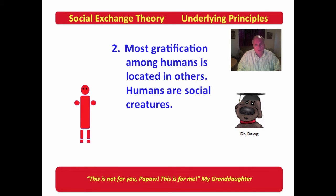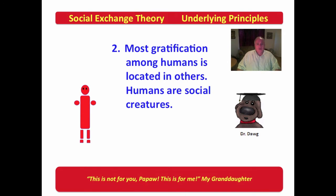Another important part of exchange theory — and you'll recognize this from Bandura's work as well — is that most gratification among humans is located in others. Humans are social creatures. If you look at social learning theory advanced by Bandura, he viewed humans as herding creatures. Social exchange theory follows in the same light: most of the gratification a human gets is located in influencing or interacting with others. None of us live in a cave, and we want those interactions to be good.